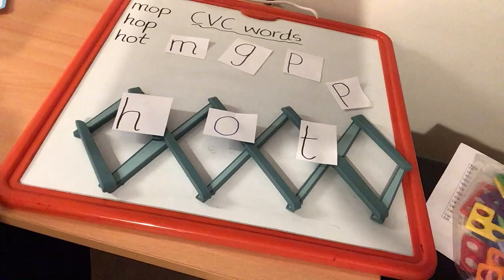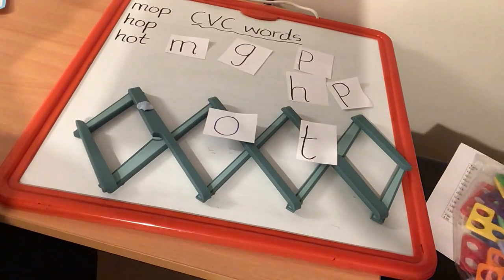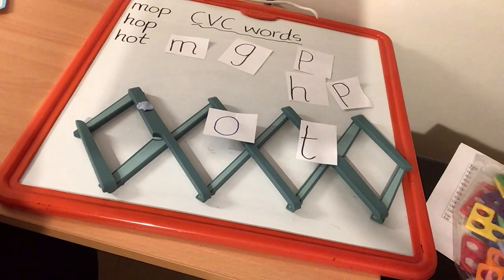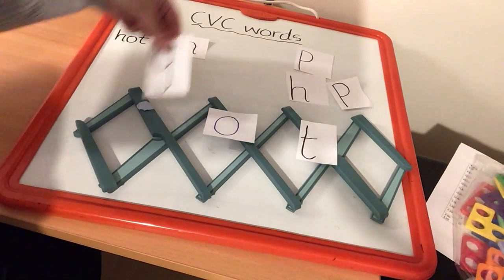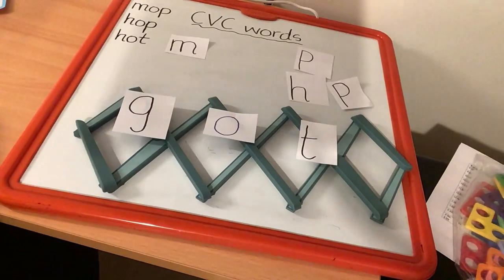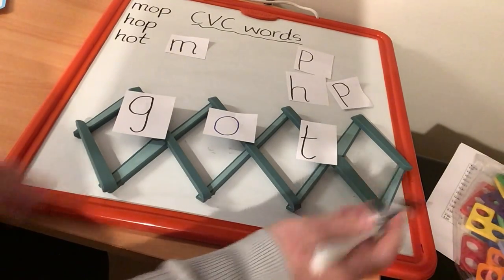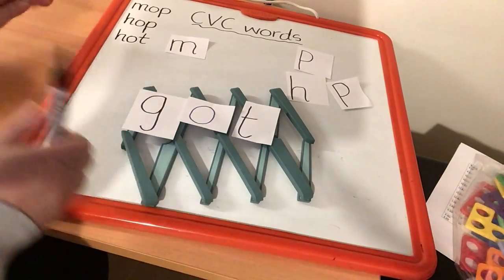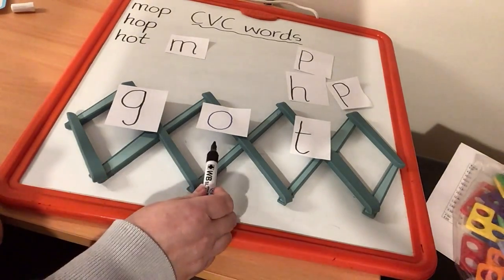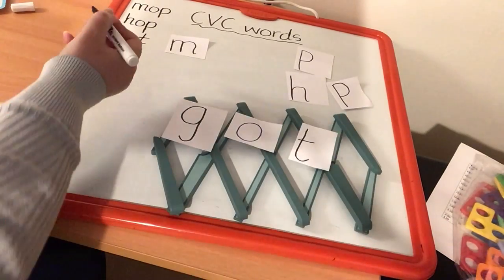Now, this time I'm going to change the first letter — my first consonant. I'm going to get rid of my H, and I'm going to look for the letter that makes the K-K-K sound. Where is that letter? Brilliant, there it is. Now let's sound across our word: K-O-T. And let's blend it — GOT. Let's try that again. Sound it out: K-O-T. And blend it — GOT. Super. Let's add that to our list as well.